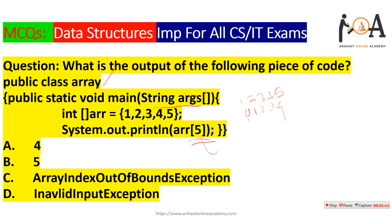These are the index numbers: at index 0, value 1 is stored; at index 1, value 2; index 2, value 3; index 3, value 4; and index 4, value 5. So what is at index number 5? Nothing is there. Therefore, an ArrayIndexOutOfBoundsException will be the output when you run this code. The array size is only 5, so valid indices go only up to 4. Since index 5 is out of bounds, option C is the correct answer.